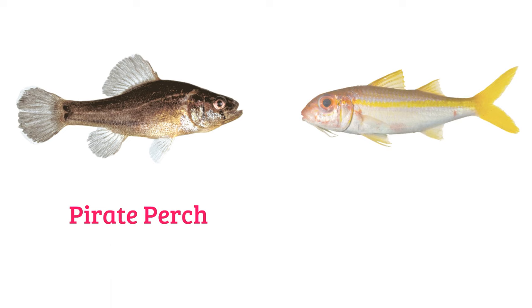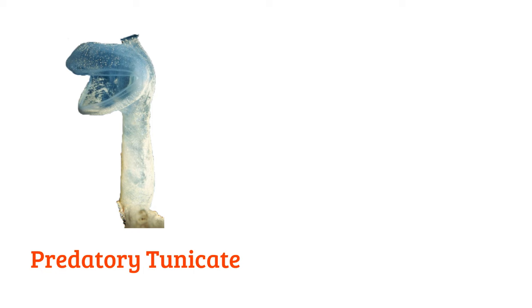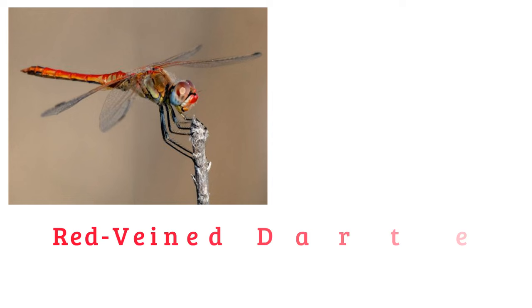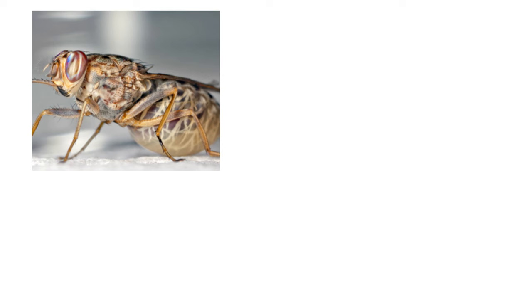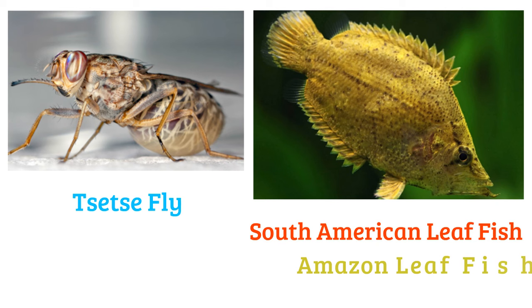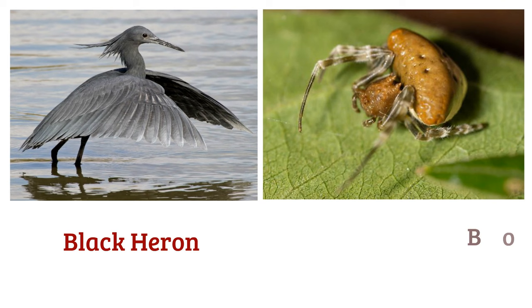Pirate perch, yellow saddle goatfish. Predatory tunicate. Purple cone snail. Red vendace. Tarantula hawk. Tsetse fly, South American leaf fish or Amazon leaf fish.